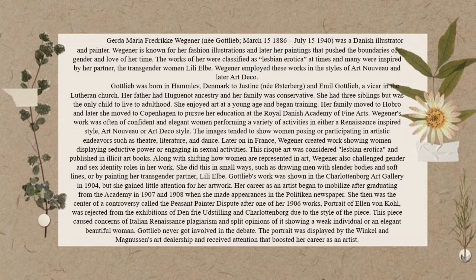Gottlieb's work was shown in the Charlottenborg Art Gallery in 1904, but she gained little attention. Her career began to mobilize after graduating from the academy in 1907, and in 1908 she made appearances in a political newspaper. She then became the center of controversy called the 'peasant painter dispute' after her 1906 work 'Portrait of Ellen Vanco' was rejected from exhibitions due to the style of the piece.